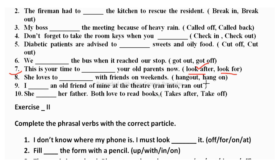Eighth sentence: 'She loves to dash with friends on weekends.' Options are 'hang out' or 'hang on.' 'Hang out' means to spend time and 'hang on' means to wait. She loves to spend time with friends, so 'hang out' is correct. Ninth sentence: 'I dashed an old friend of mine at the theater.' 'Ran into' means to see someone unexpectedly — the correct answer is 'ran into.'